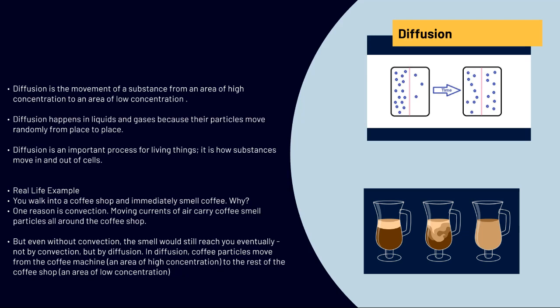In diffusion, coffee particles move from the coffee machine, an area of high concentration to the area of the coffee shop, an area of low concentration. So if you look at the image to our right, you get another visual example. The substance on top is an area of high concentration. As time goes by, it eventually mixes and gets into an area of low concentration.